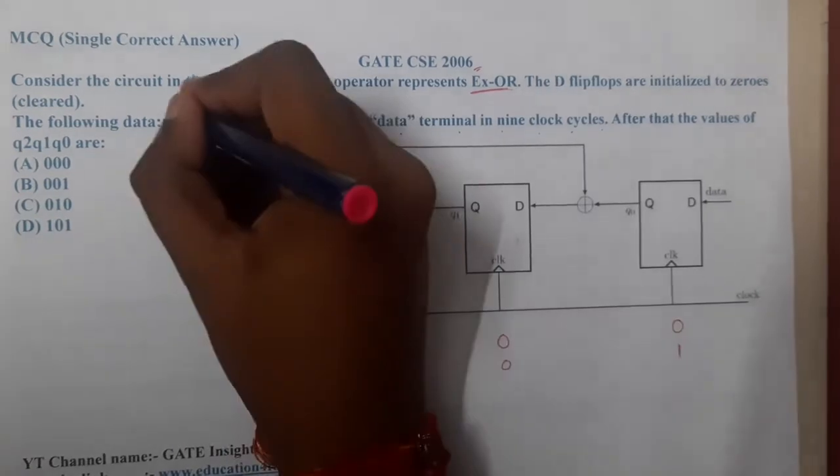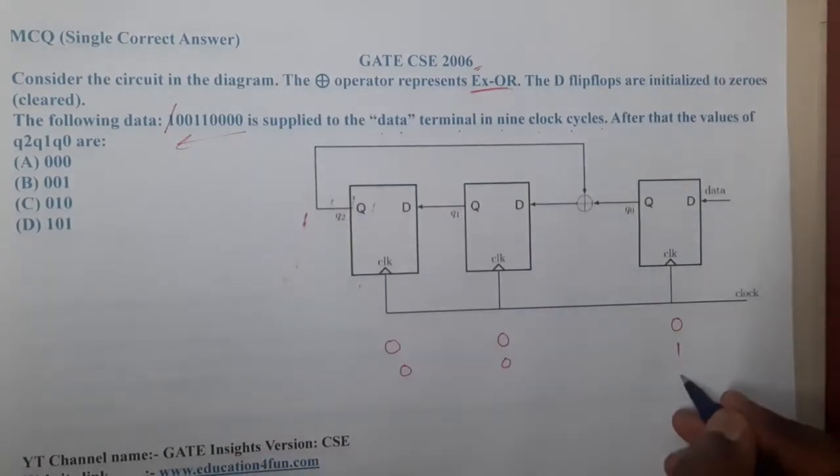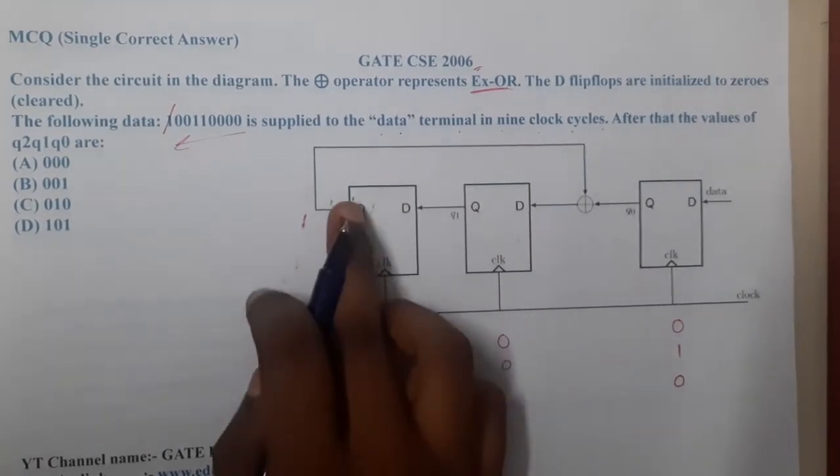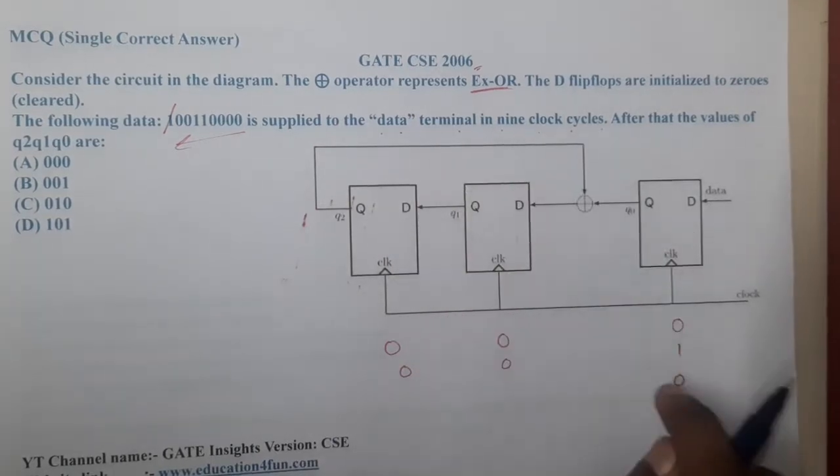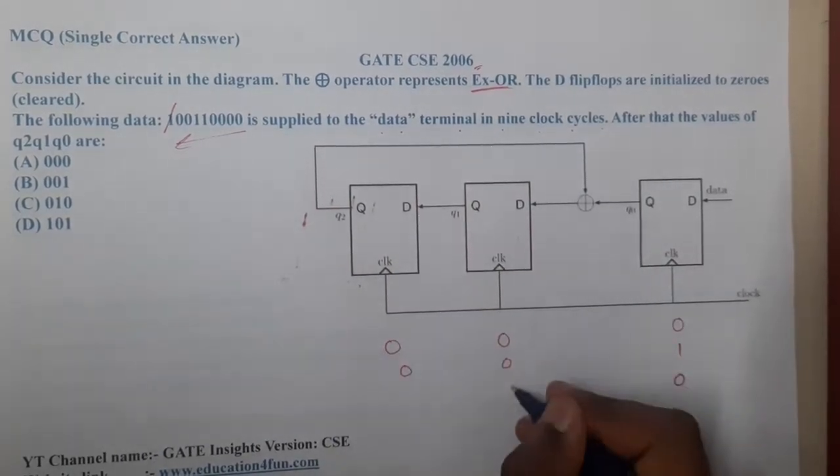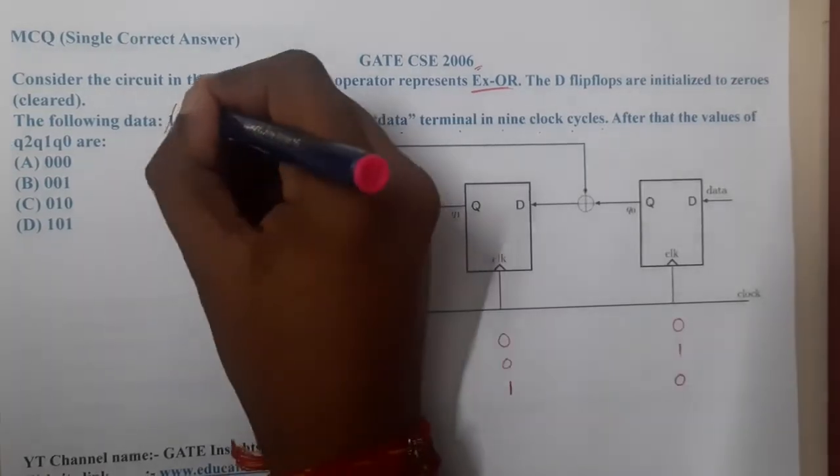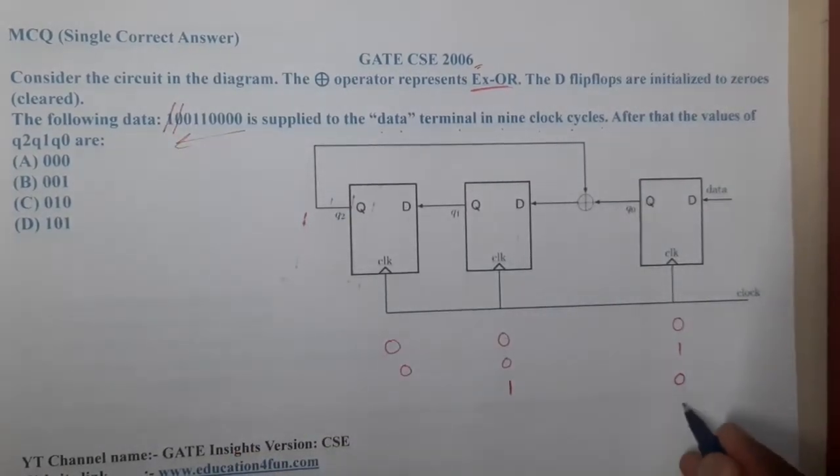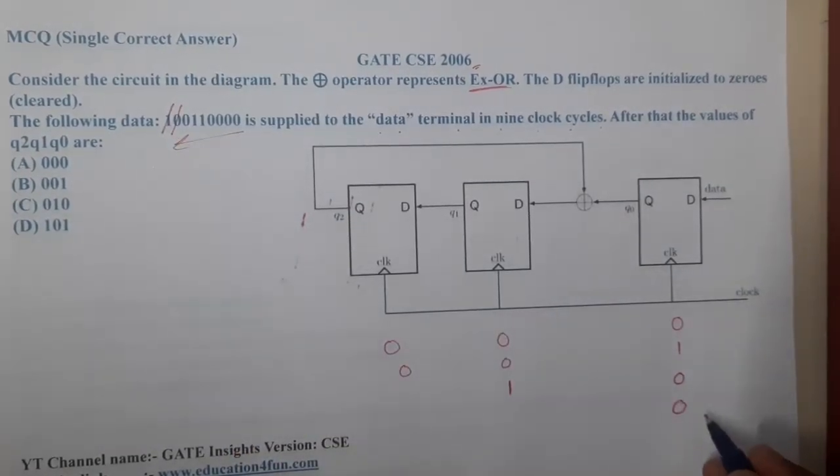In the next step, 1 is pushed. In the next step we will push 0, but from here you will be getting 1, right? 0 XOR 1 is 1, so 1 will be the thing here. This 0 has been pushed, so again one more 0 will be pushed. That 0 will be coming here.